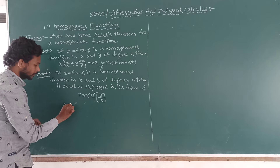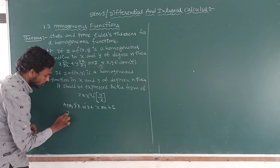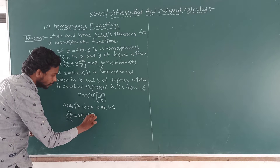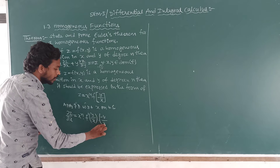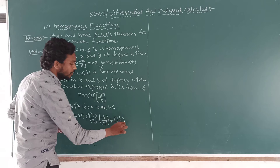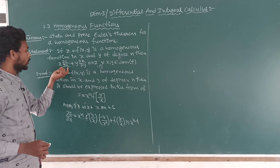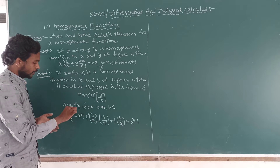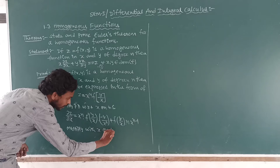Apply partial derivative with respect to x on both sides. Using the product rule (u·v), ∂z/∂x = x^n · f'(y/x) · (−y/x²) + f(y/x) · nx^(n−1). Since we need x·∂z/∂x, multiply both sides by x.